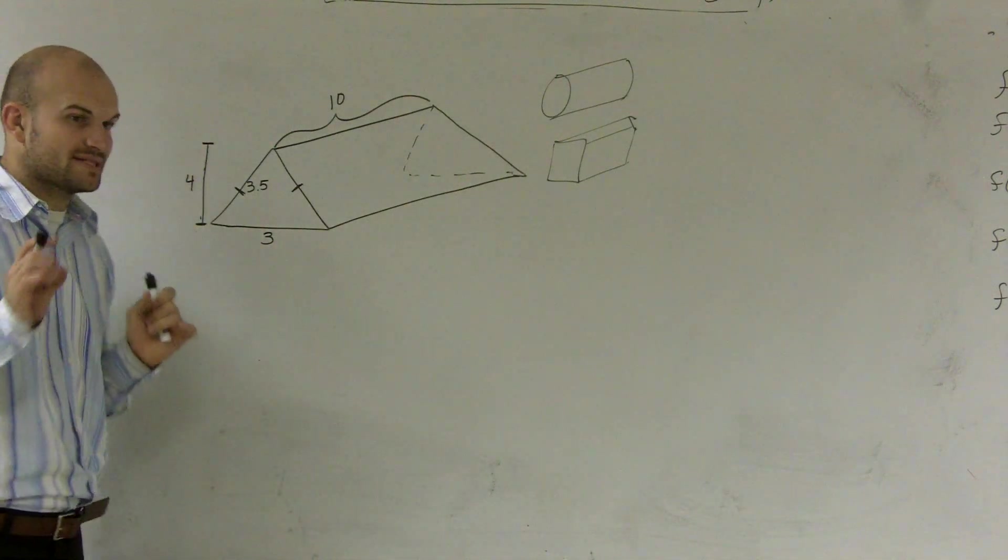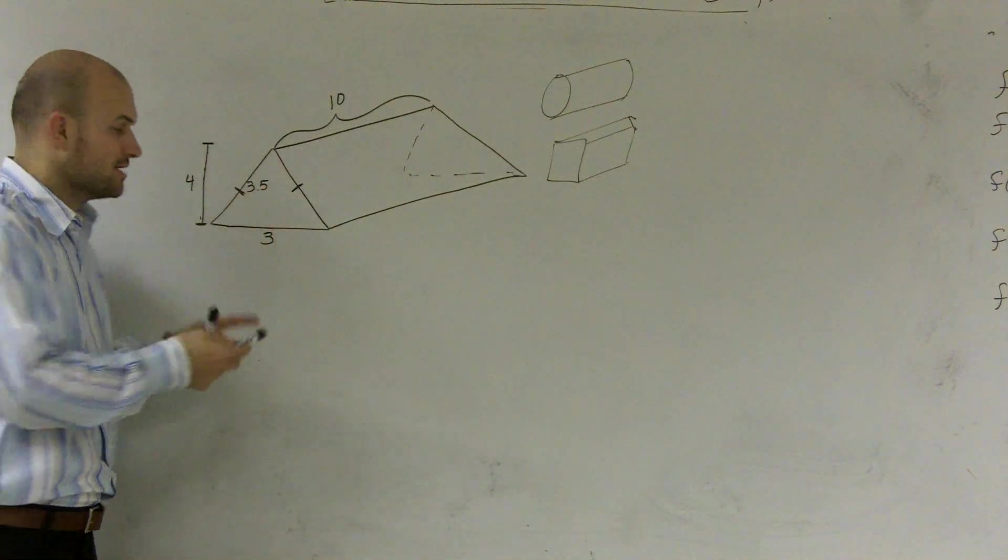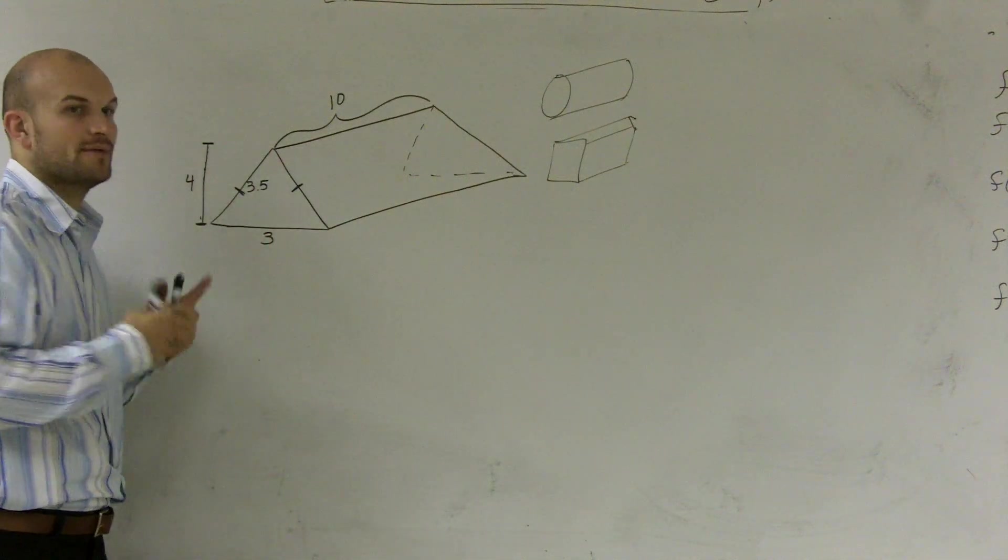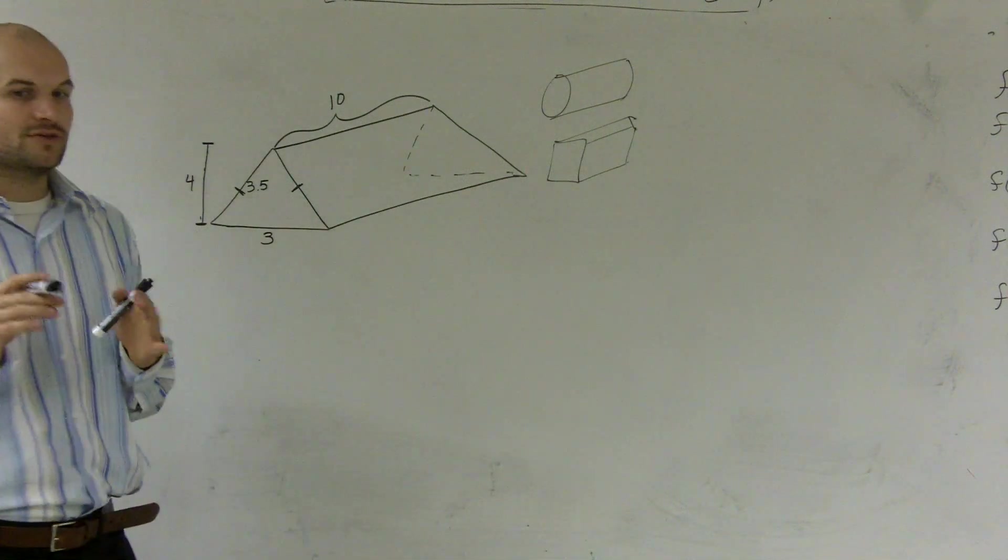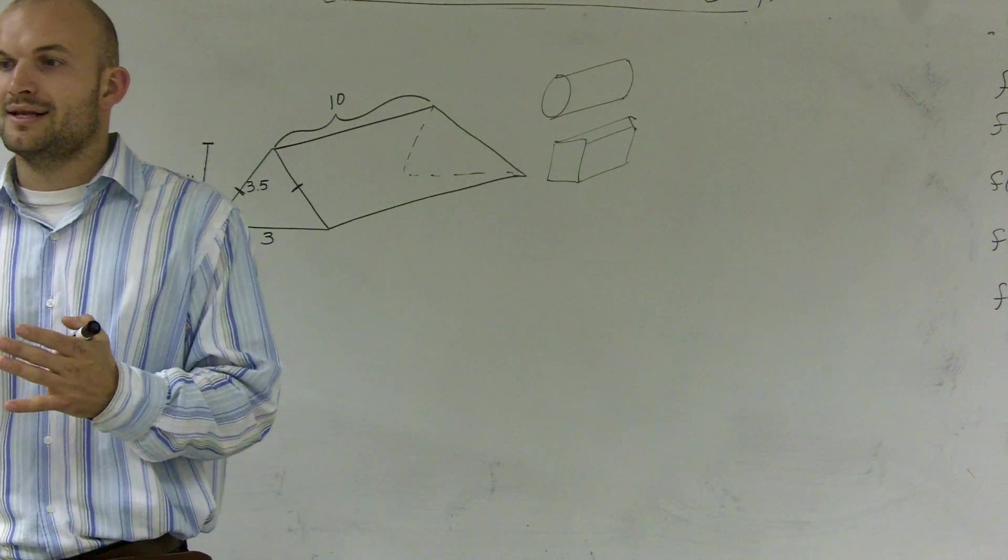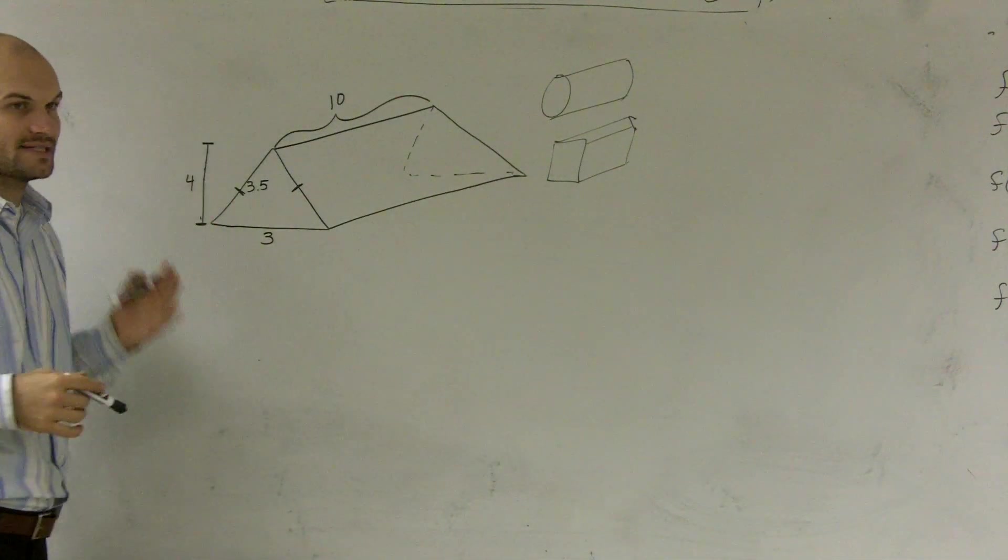One big mistake that students will do is they'll say length times width, or one half length times width. So they'll do 3 times 3.5 and multiply by one half. That's a big mistake. Don't do it like that. You only want to use length times width when you have a right triangle. When it's not a right triangle, you need to know what the height is of the triangle.